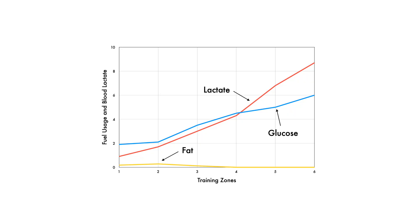Moving on to zone two, Dr. San Milan calls this the fat max zone, because it is the zone where we use the most amount of fat for ATP production. We're still using way more glucose than fat, but as you can see on this graph, we use the most amount of fat for fuel in zone two.